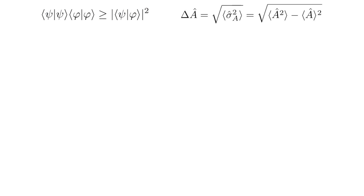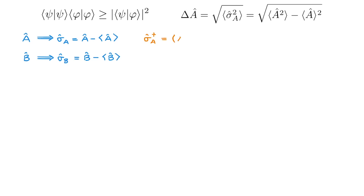To make progress, consider two observables A and B with the associated operators sigma A and sigma B. Sigma A dagger equals A minus the expectation value of A, all daggered, which when expanded gives us sigma A — since A is an observable it is Hermitian — implying that sigma A is also Hermitian. We can of course say the same about sigma B.